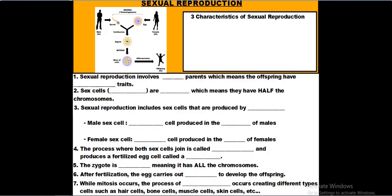Welcome to our vodcast on sexual reproduction. In this vodcast, we'll go over the three characteristics of sexual reproduction, talk about the different terms used to describe the events and cells involved, and briefly touch on some development and what happens after fertilization occurs.